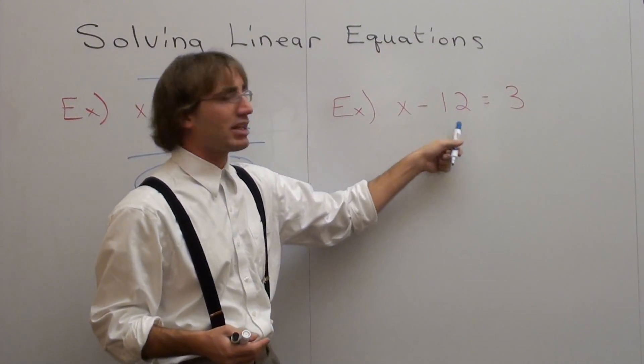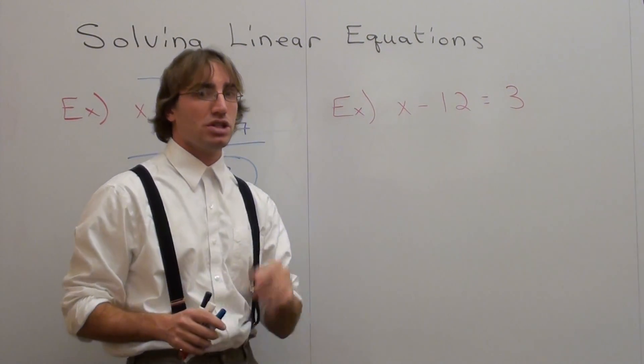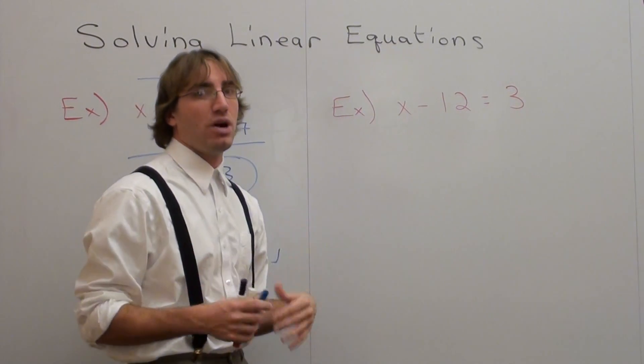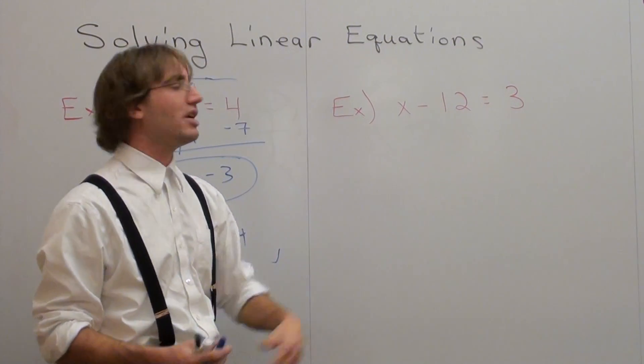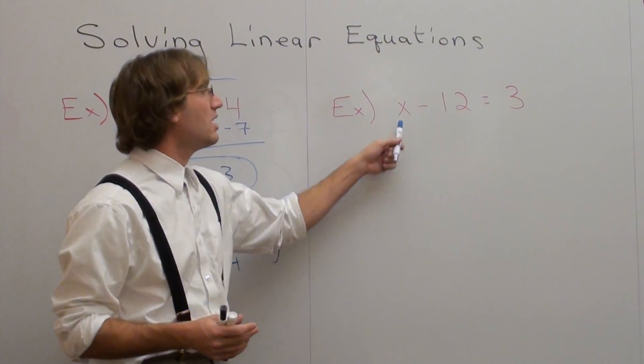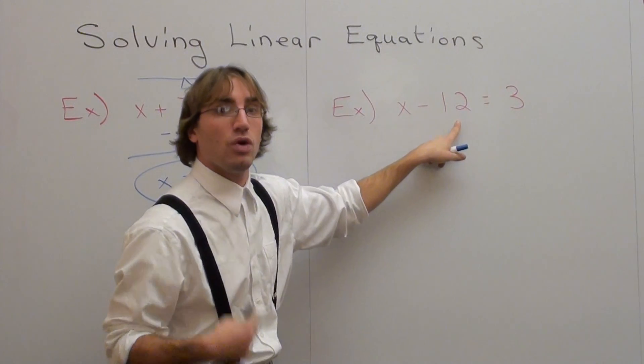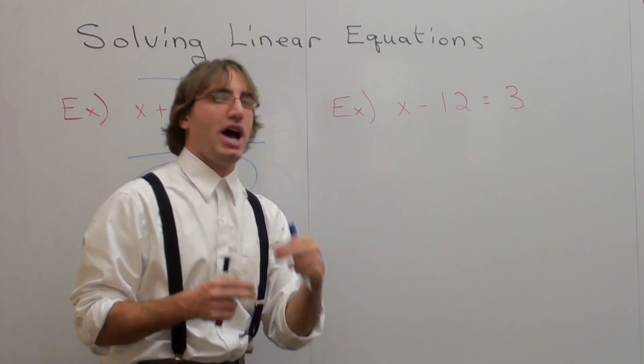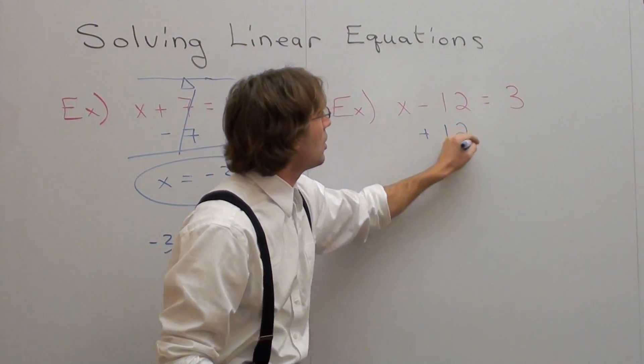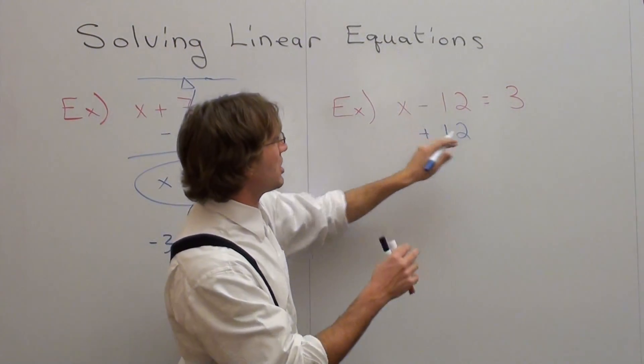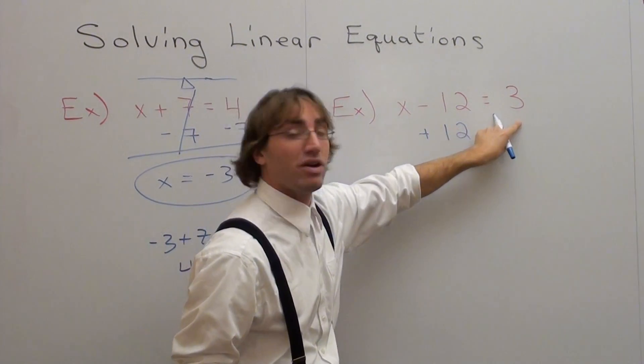This time we have x subtracted by 12 equals 3. Again, I've got a couple objectives. One, keep the equation balanced. Two, solve for x. Figure out what x is. So I have x subtracted by 12 equals 3. x is not by itself. It's got a negative 12 with it. I want to get rid of the negative 12. How do I get rid of a negative 12? I add 12. So I add 12 to this side of the equation, to this side of the teeter-totter. But what I do on one side, I better do on the other. So if I add 12 over here, I better add 12 over here.